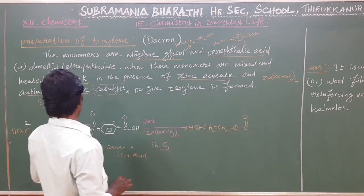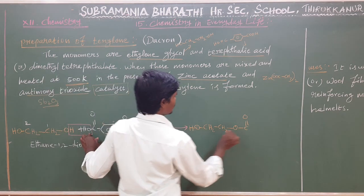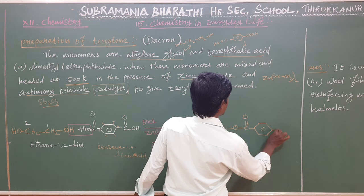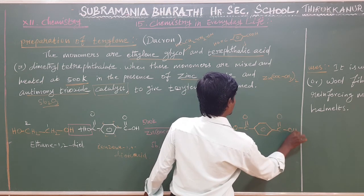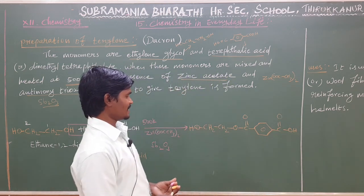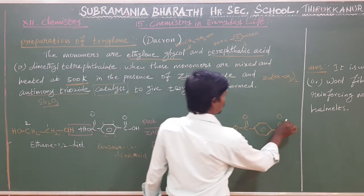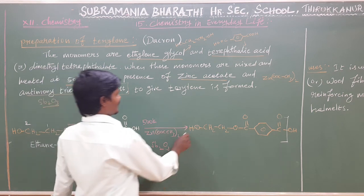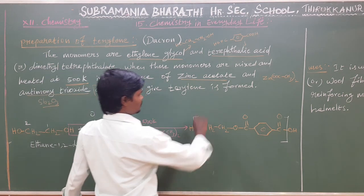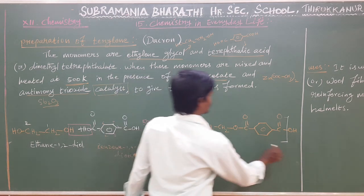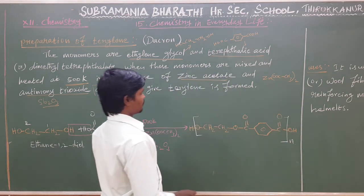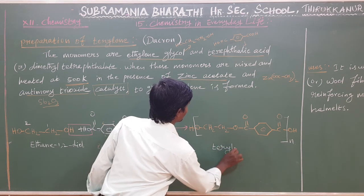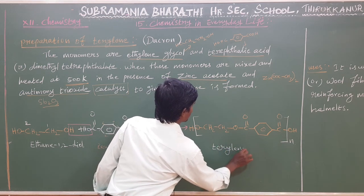The OH group from the carboxylic acid and the H from the glycol's OH group are eliminated as water. The OH is eliminated and the glycol portion is eliminated. This condensation reaction happens n times, and we get the product Terylene, also called Dacron.